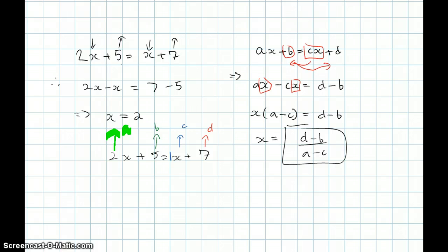Okay, so now that we have this, let's use it. So d minus b over a minus c: 7 minus 5 over 2 minus 1. And what would that give us? That would give us 2. See, we get the same answer.